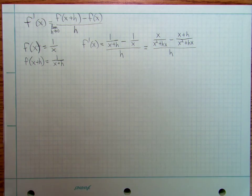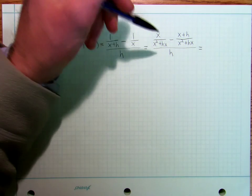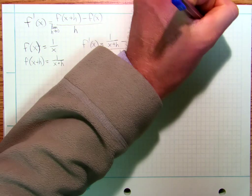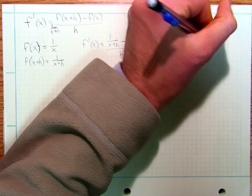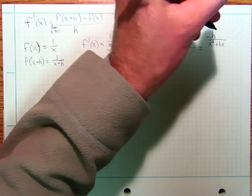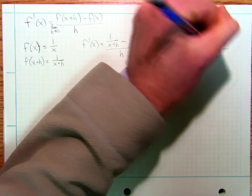Well, then I end up with, do you want some algebra? You can pause and do the algebra yourself. I'm going to end up with minus h over x squared plus hx, all that over h.